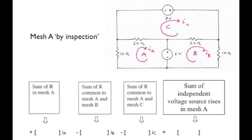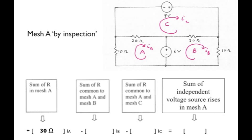Look at mesh A. Generally, the mesh current equation there will consist of something times IA plus something times IB plus something times IC equals a voltage value. This figure shows what those somethings are. For mesh A equations, I sub A will be multiplied by the sum of the resistance in mesh A. The sum of the resistance in mesh A is just 10 ohms plus 20 ohms, or 30 ohms. I'll simply write that value in the first bracket as thus.